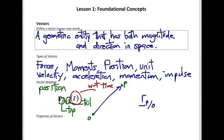One exception I use is to distinguish unit vectors. A unit vector is a vector that has a magnitude of 1. When I write these, they always have a hat symbol. So this would be the unit vector u-hat, the unit vector e-hat sub x, the unit vector a-hat sub 1. Any time you see a hat, that indicates it is a vector with a length of 1.